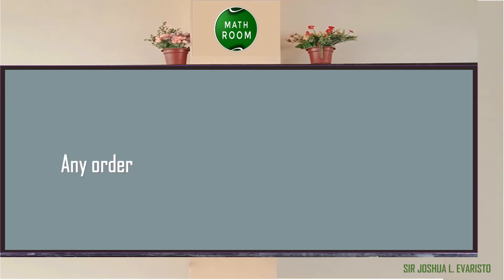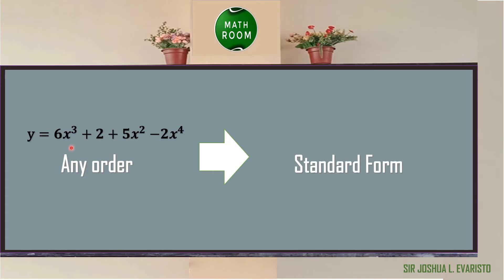The terms of a polynomial function may be written in any order; however, if they are written in decreasing powers of x, we say the polynomial function is in standard form. For example, to transform a polynomial function into standard form, we arrange the terms in decreasing powers of x. So we get y = −2x⁴ + 6x³ + 5x² + 2, where −2x⁴ has the highest exponent, followed by 6x³, then 5x², and lastly the constant 2.